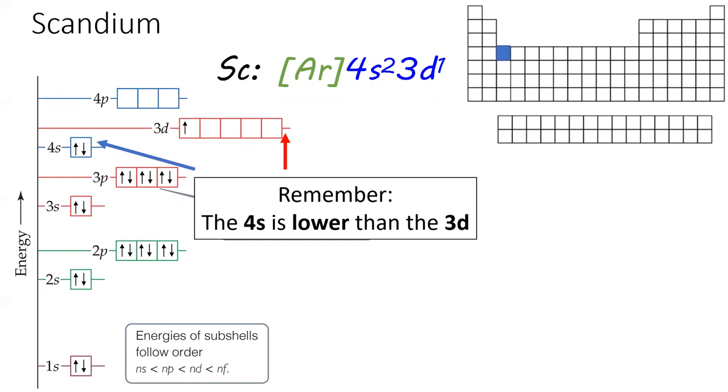is the first element with an electron in a D subshell. It is also the first element of the transition metals, which I've highlighted in yellow. Because the D subshell has 5 orbitals and fits 10 total electrons, the transition metals widen the periodic table by 10 spaces.